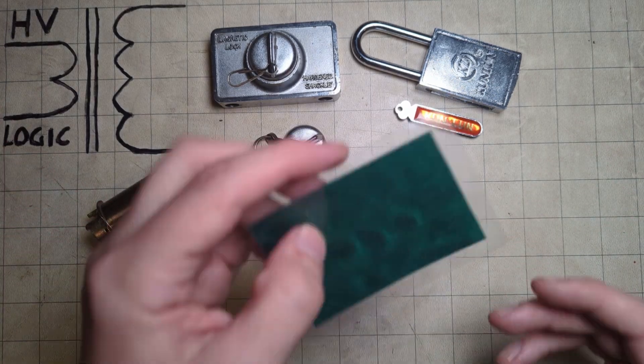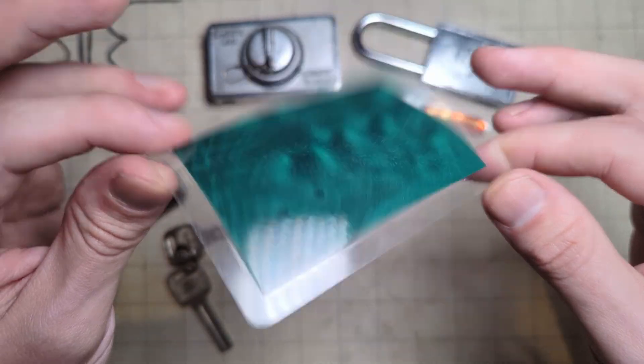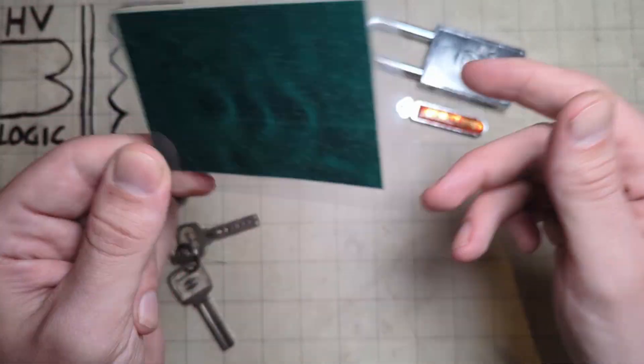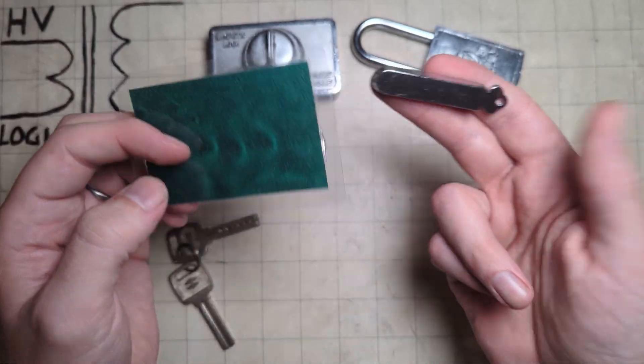Alright, this is just a quick video to show off this magnetic viewing paper I just got off eBay. This is really handy for magnetic locks for showing you how they work.